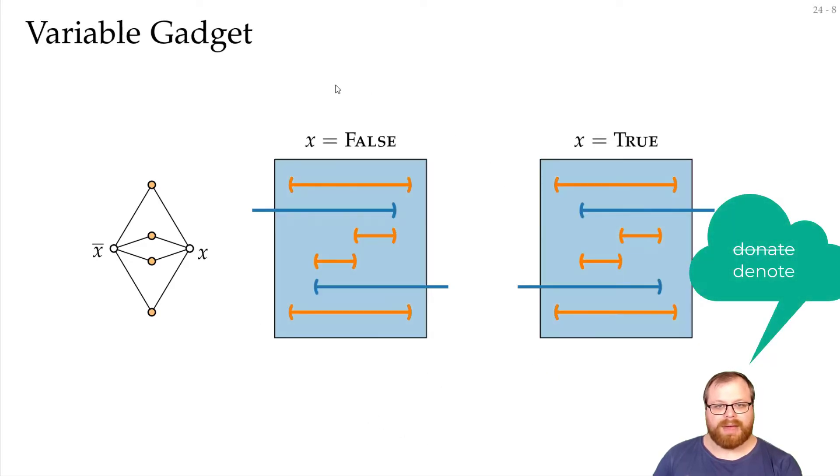And we will make these two possibilities encode our variable x. This here means false and this means true. So if the variable x is true, then it leaves on the right side at the top and on the left side at the bottom. If it's false, it leaves on the right side at the bottom and on the left side at the top.